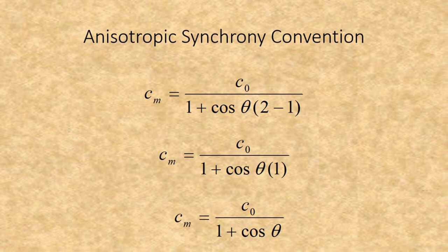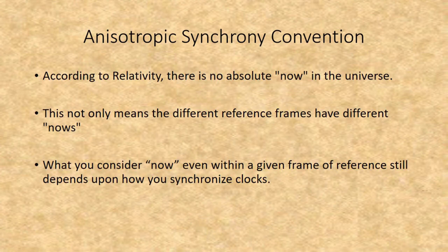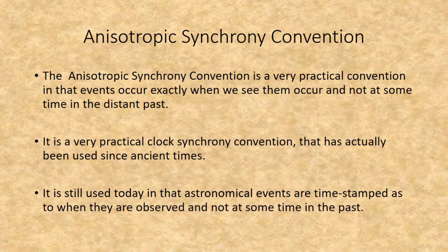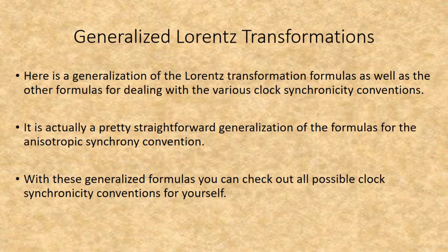It needs to be remembered that these relationships were derived based on what would be observed in an Isotropic Synchrony Convention, and yet it is in the Anisotropic Synchrony Convention where these formulas actually represent reality. According to relativity, there is no absolute 'now' — different reference frames have different nows, and what you consider now within a given frame still depends on how you synchronize clocks. The Anisotropic Synchrony Convention is very practical: events occur exactly when we see them occur, and not at some time in the distant past. It is a convention that has actually been used since ancient times, and is still used today — astronomical events are timestamped as when they are observed, not at some time in the past.